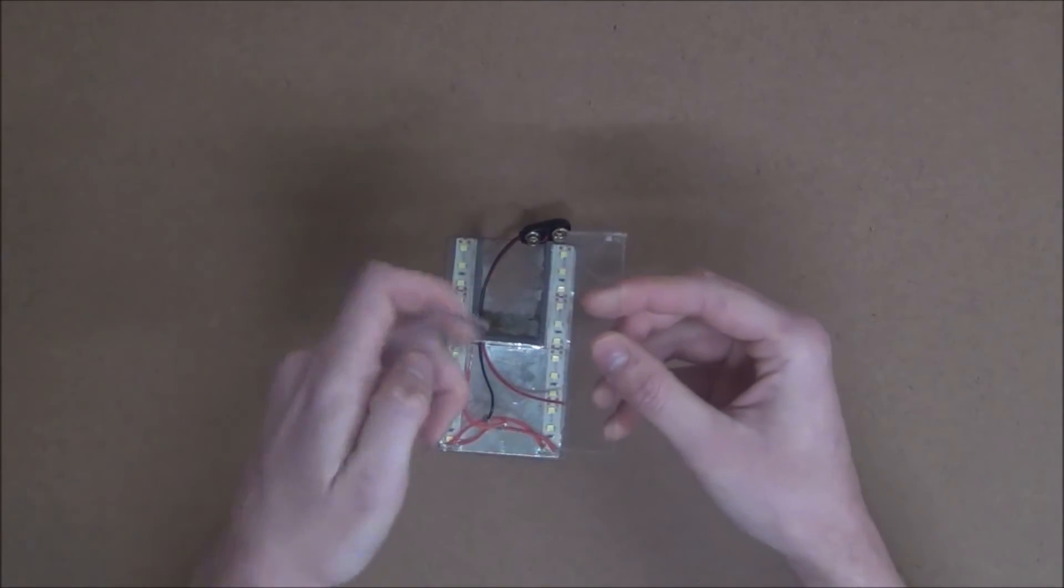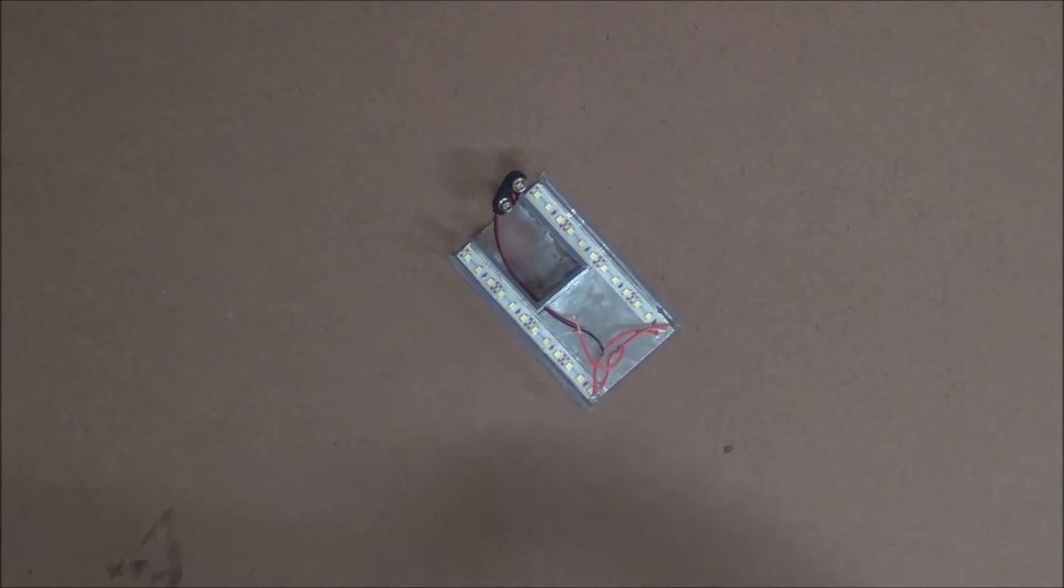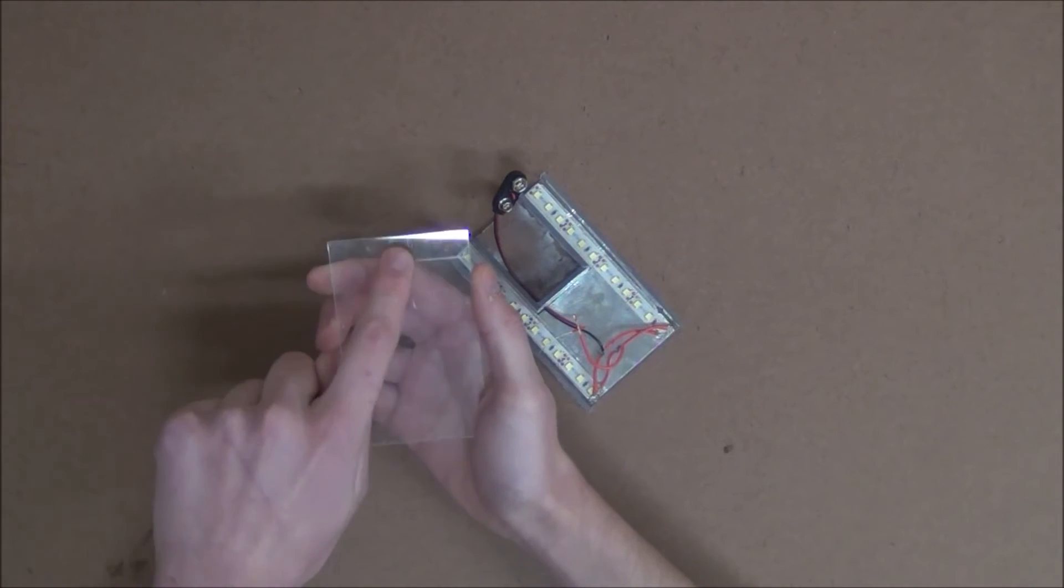Next, we can cut out two 3¼ inch wide pieces and glue them onto the sides. After that, we'll take our face plate and we'll drill a hole in the center of it, about two-thirds of the way down, just large enough to fit our switch.